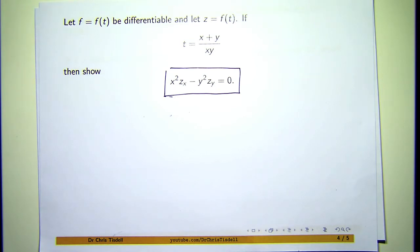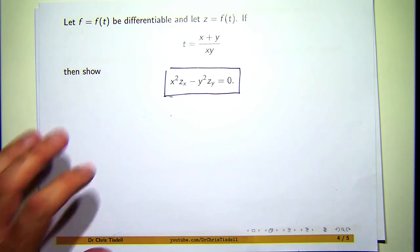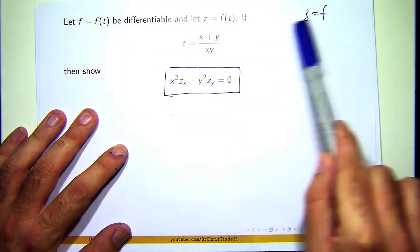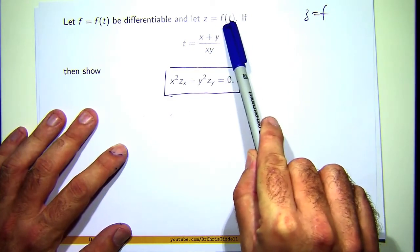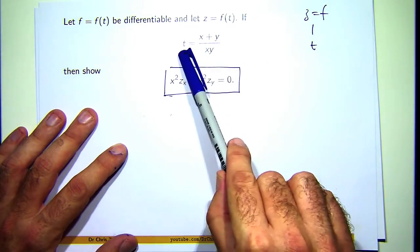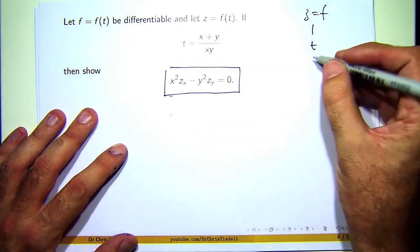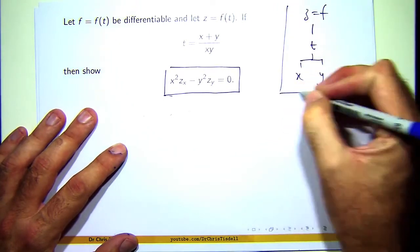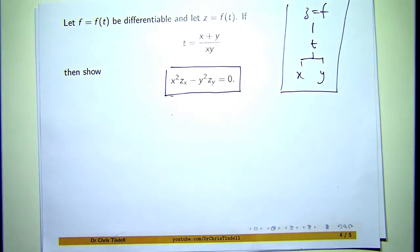So we're going to use the chain rule, and at least what I like to do with chain rule is draw a little diagram. So you start off with z equals f, and then you look at the dependencies. f depends on one variable t, so you draw a little link down to a t. You look at t—t depends on two things, x and y—so you draw a little branch.